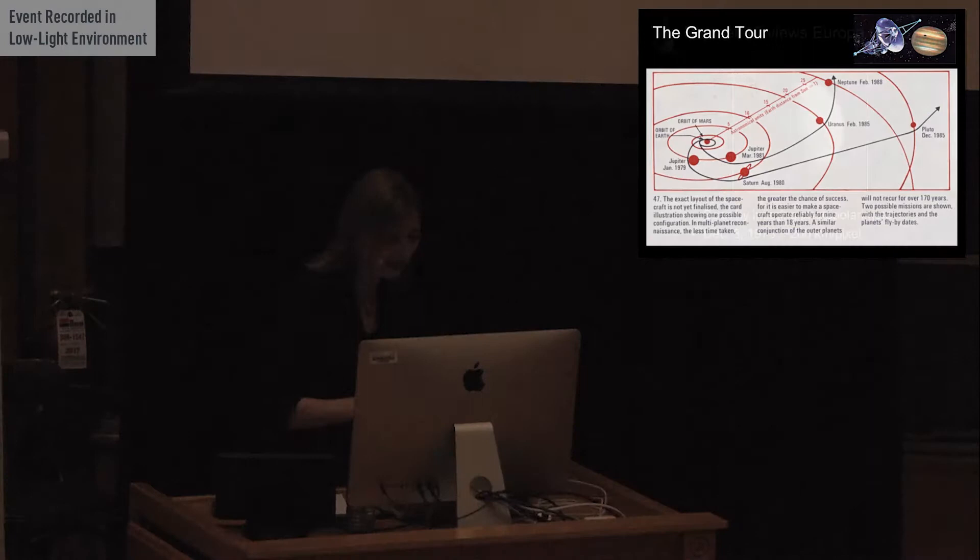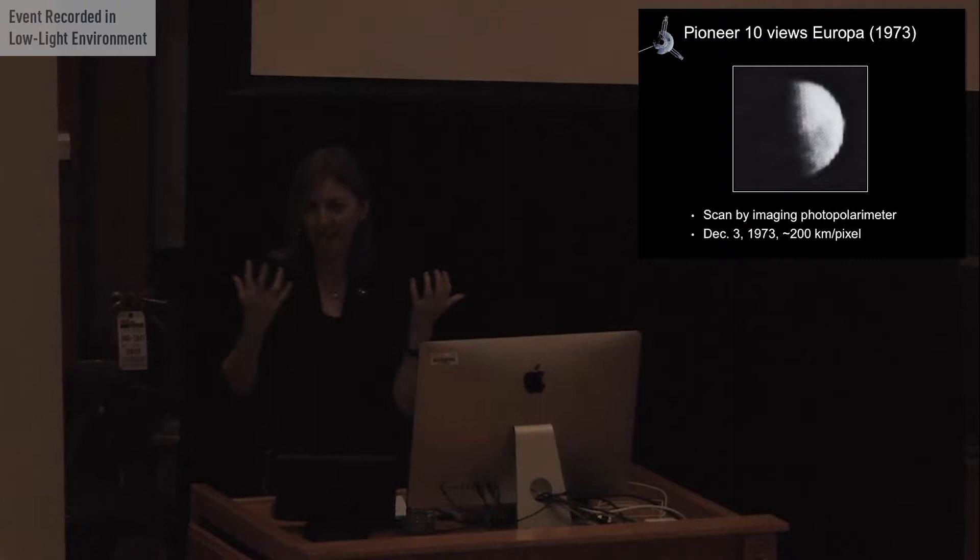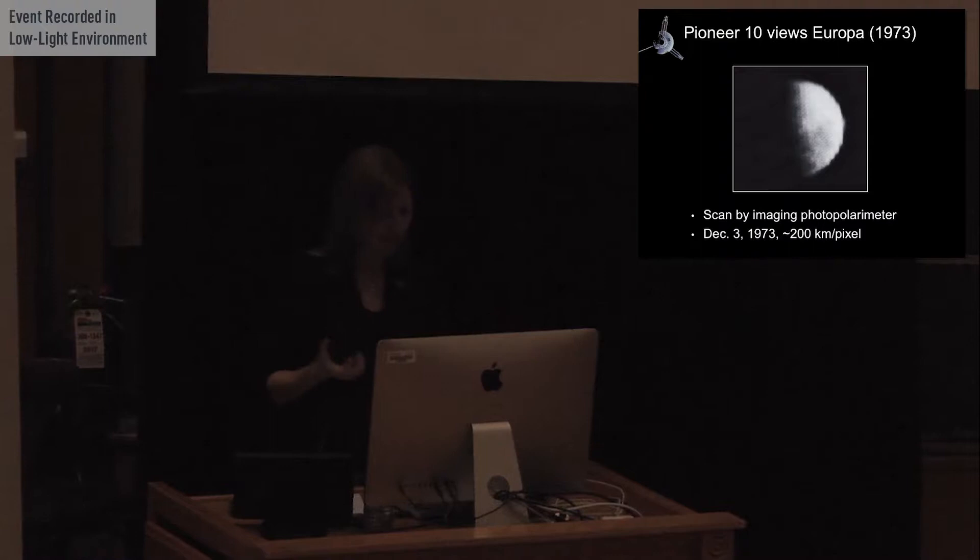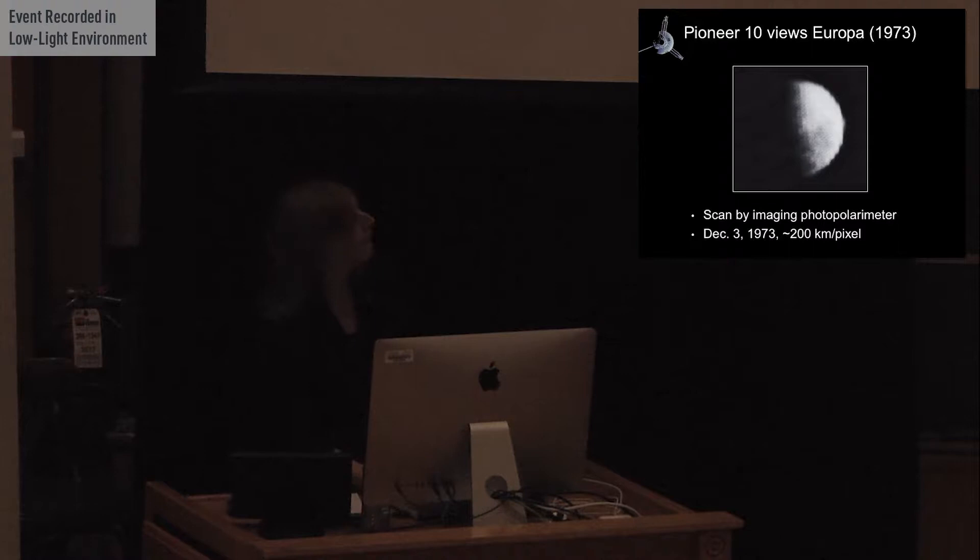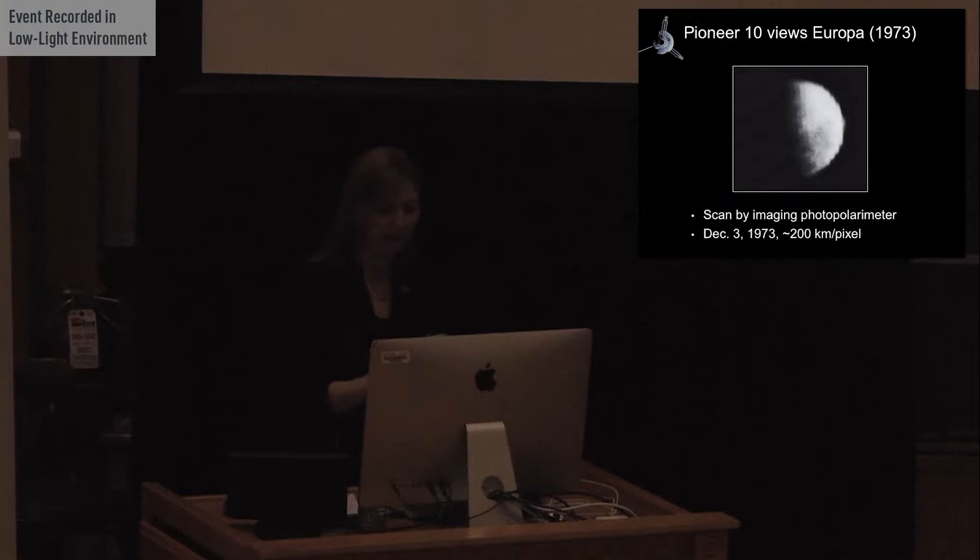So this is Pioneer 10. Pioneer 10 was the first spacecraft to send an image back of Europa. It also obtained a lot of information about the Jovian system. It survived the asteroid belt with no problems. It didn't get hit by anything. And it learned a lot about the atmosphere of Jupiter and also imaged all the moons. Pioneer 11 also looked at the atmosphere of Jupiter, but it didn't take any images of the moon. So this was our first real look at Europa, not through a telescope. And you can see on this, it's very pixelated, it's very blocky, but you can see some variations, sort of light and dark variations on this moon. So this was the first hint that Europa might not be just this uniform ball of ice.